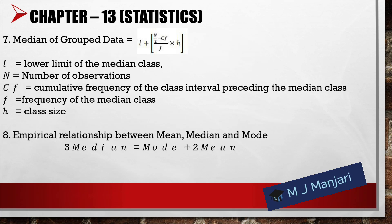Median of grouped data = L + [(N/2 − CF)/f] × h, where L is the lower limit of the median class, N is the number of observations, CF is the cumulative frequency of the class interval preceding the median class, f is the frequency of the median class, and h is the class size. The empirical relationship between mean, median, and mode is: 3 × median = mode + 2 × mean.